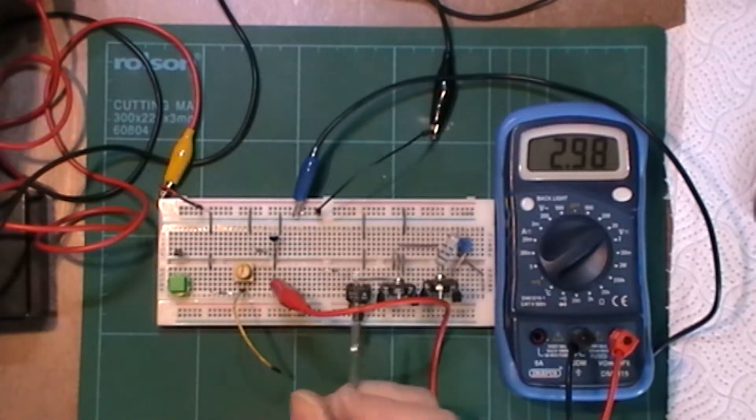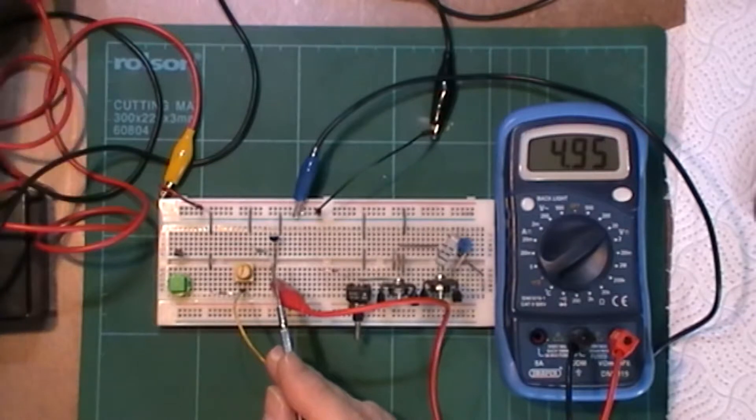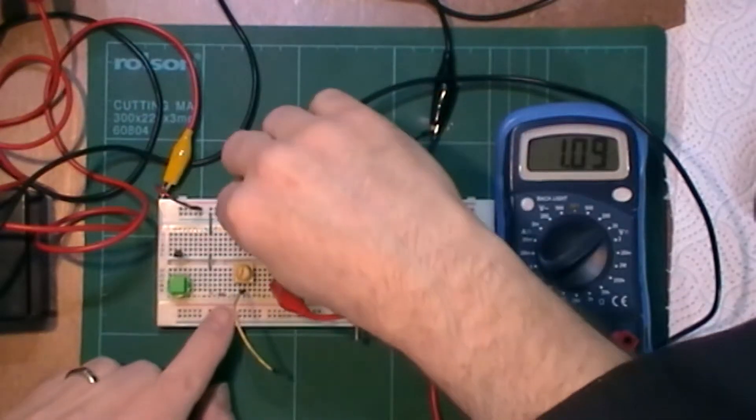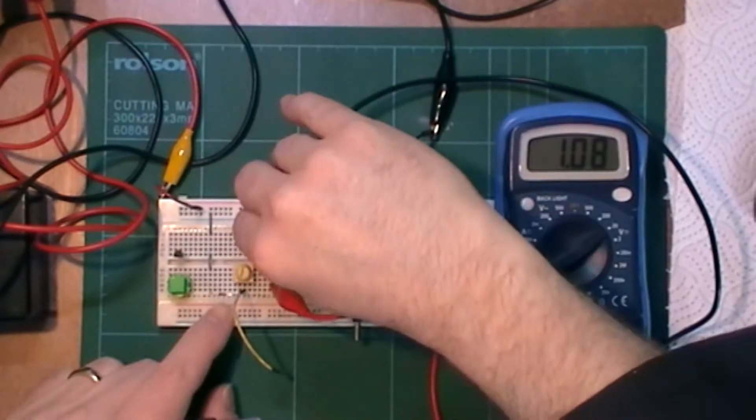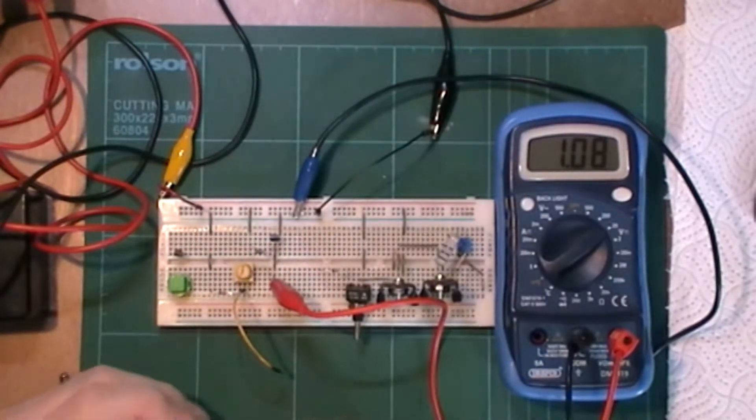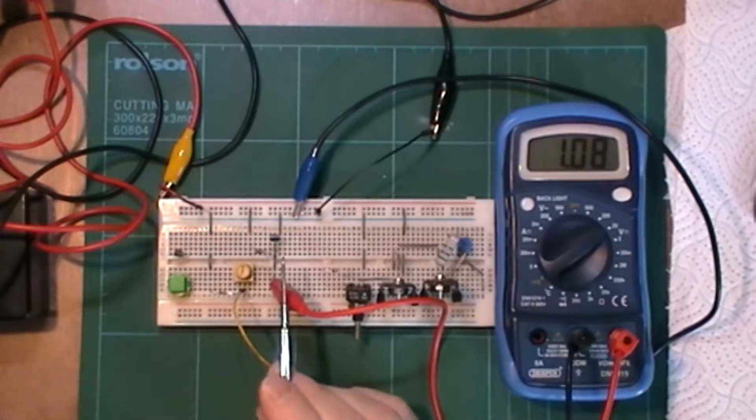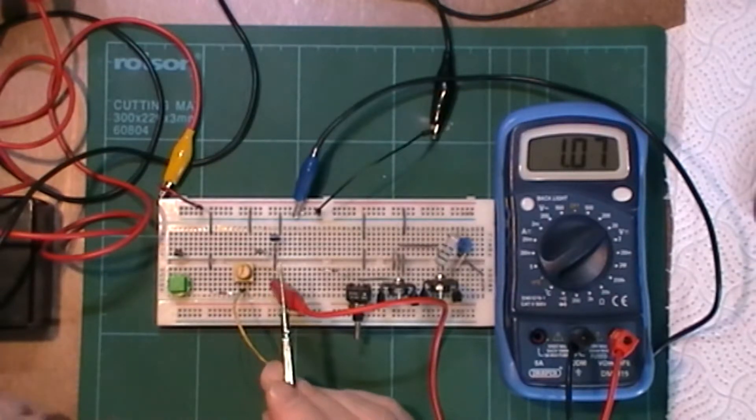Now this should be a 2.5 volt reference. I turn it up we get 2 volts, 3 volts, still 3 volts, 4 volts, 5 volts so that is not giving me 2.5 volt reference. But if I take this and turn it round and assume that the diagram is wrong and they've got the minus and the adjust pin in the wrong way for the diagram.